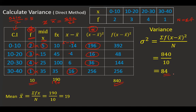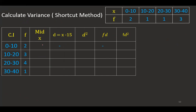This is how we calculated variance using the direct method. Now for the shortcut method or assumed mean method: as usual, I find the mid-x values. Then I choose a value in the middle of the mid-x column as my A value — I take A equals 15. I subtract A from each mid-x: 5 minus 15 gives minus 10; 15 minus 15 gives 0; 25 minus 15 gives 10; and 35 minus 15 gives 20.